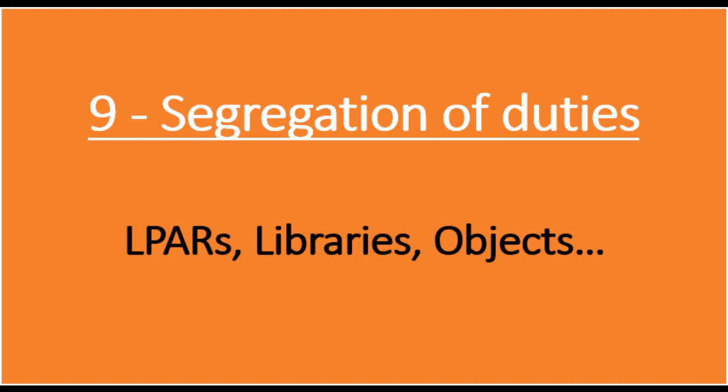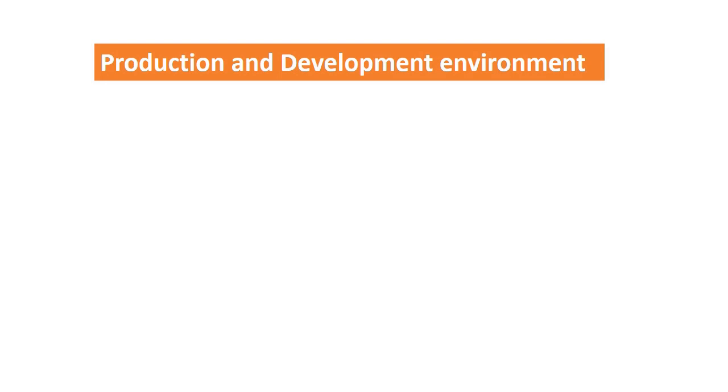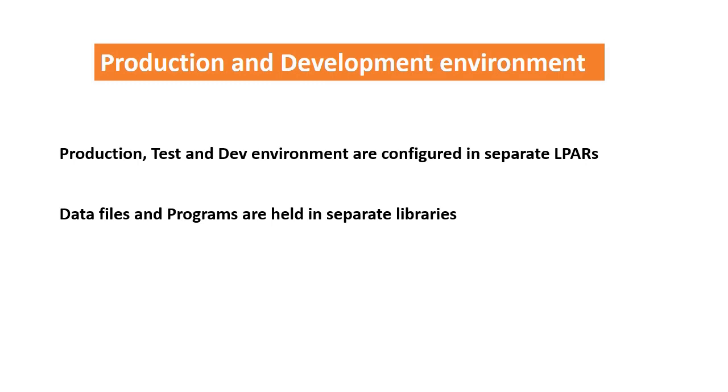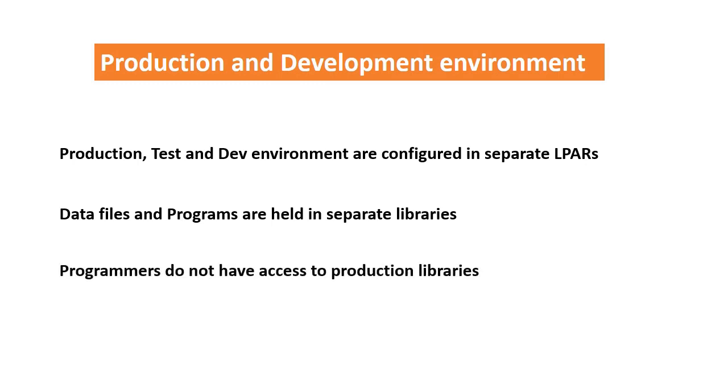Point number 9: Segregation of Production and Development Environment. Way before virtualization became popular, IBM's AS/400 had already implemented this concept — it's called logical partitioning or LPAR. Each LPAR has its own processing, memory, and identification such as IP and system name. Ensure that production, test, and development environments are set on different LPARs with unique credentials. Additionally, make sure data files and programs are held in separate libraries, and verify that programmers do not have access to production libraries.